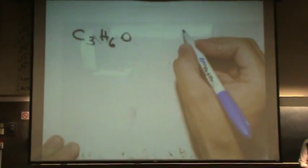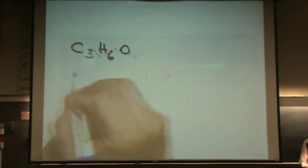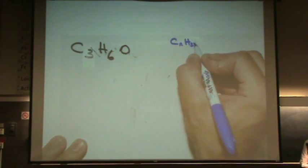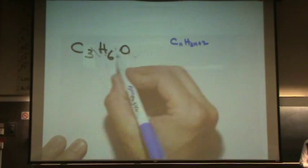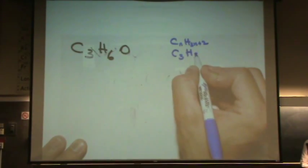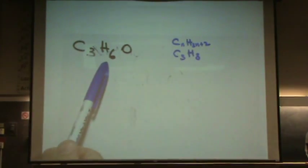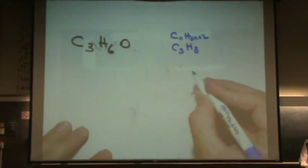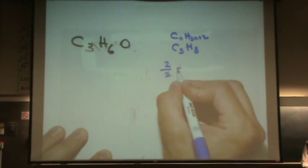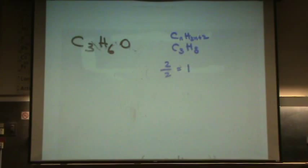To do the degree of unsaturation, you always compare it to the alkane, which has this formula. And when n equals 3, H should be 8, but it's only 6. So that means I'm missing two hydrogens. If I divide that number by 2, that gives me the degree of unsaturation.